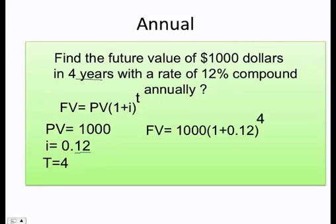Now I just plug it in. Then I elevate. First of all, you have to do 1 plus 0.12, then you do the elevation, and finally you multiply by 1000. You should get this answer: $1,573.52. This is just an approximation.